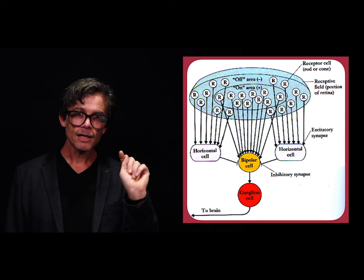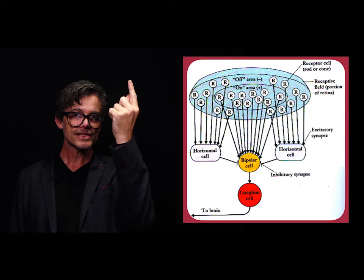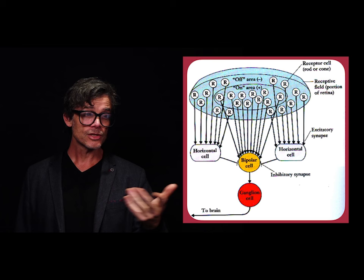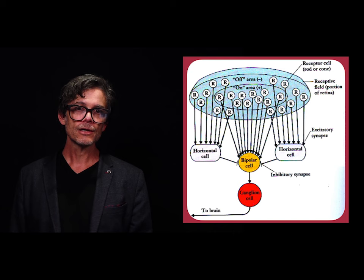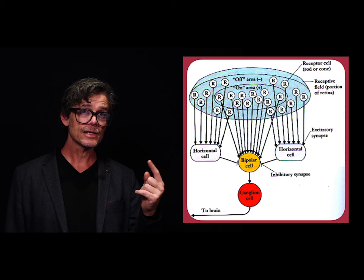Ganglion cells don't just receive excitatory photoreceptor inputs as we've described so far. In fact, they respond to specific spatial patterns of light. On the right, we have a wiring diagram. The small circles at the top, each labelled R, represent photoreceptors. The receptors located in the central region — that is, the central disk at the top — labelled the on area, feed into a bipolar cell. The receptors located on the outer ring, labelled the off area, feed into horizontal cells.